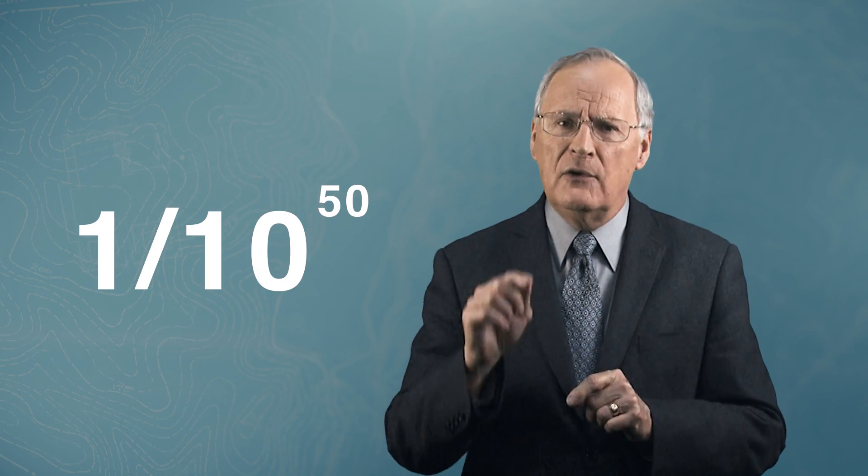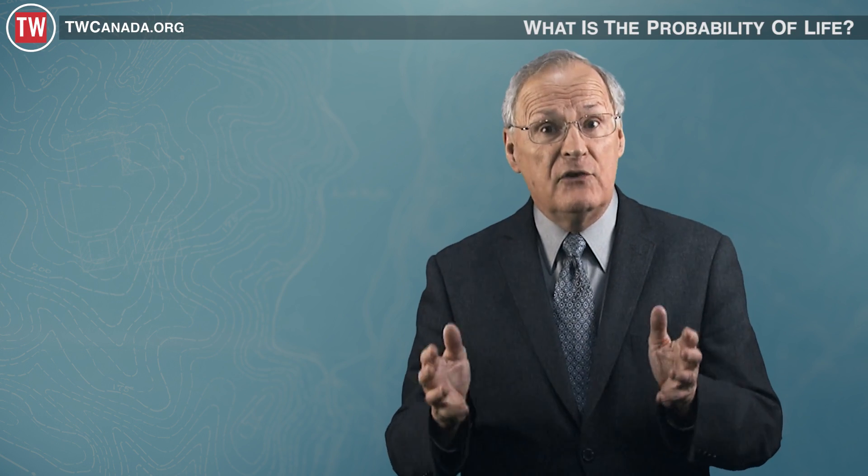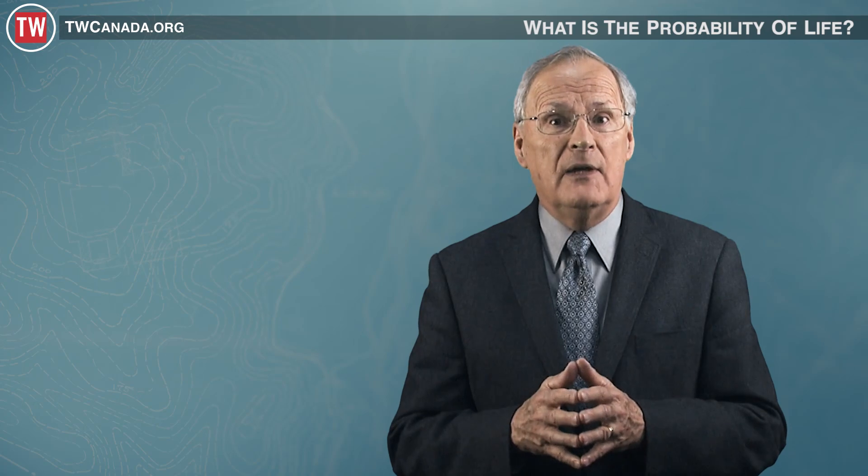In mathematics, if the chances of something occurring are smaller than 1 over 10 to the power of 50, we generally say the chances of that event are nil, that is, it will not occur. That's because 1 over 10 to the 50th, or 10 to the 50th, represents a number that is far greater than the estimated number of planets in the entire universe.